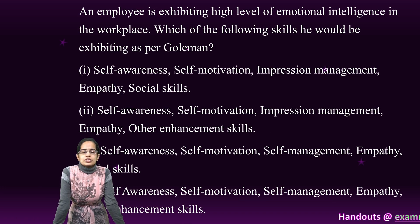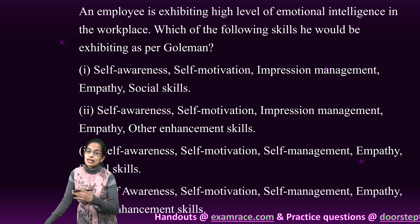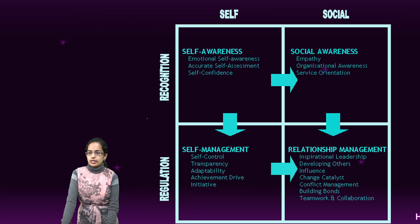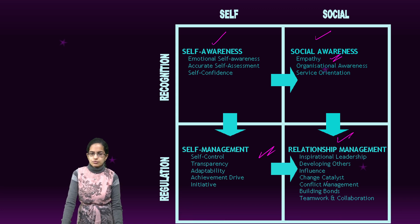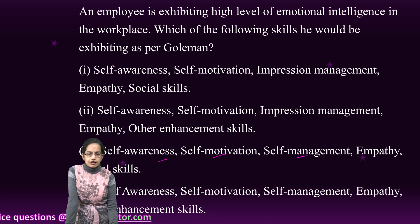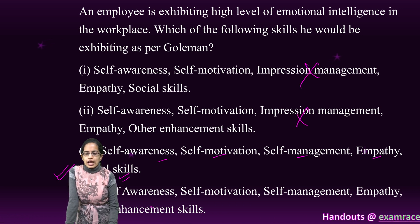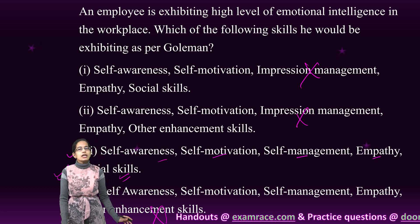The next is Goleman's theory of emotional intelligence, which we have discussed in a separate lecture. The key essentials are self-awareness, social awareness, empathy, self-management, and relationship management — or alternatively: self-awareness, self-motivation, self-management, empathy, and social skills. Impression management is not required, so that is incorrect. Other enhancement does not make sense either. So the only correct option here is option three.